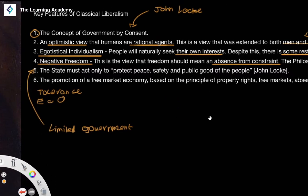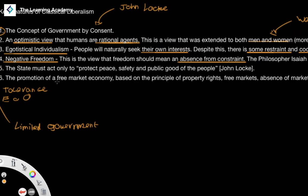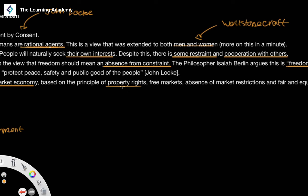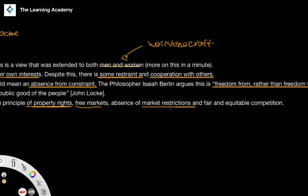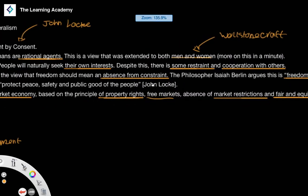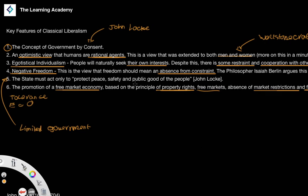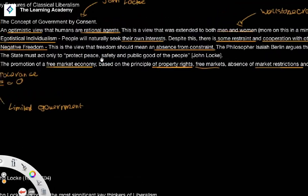Classical liberals also emphasise the promotion of a free market economy, based on principles like property rights — which Locke discusses quite a lot — the concept of free markets, the absence of market restrictions, and fair and equitable competition. This is a market that operates freely, guided by what Adam Smith called the 'invisible hand of the market,' moving and shifting in whatever way it chooses. These are the main features of a classical liberal ideal.